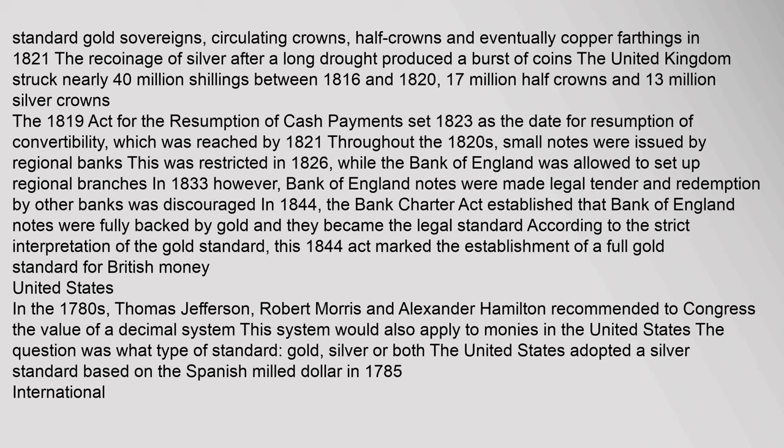The United Kingdom struck nearly 40 million shillings between 1816 and 1820, 17 million half-crowns, and 13 million silver crowns. The 1819 Act for the Resumption of Cash Payments set 1823 as the date for resumption of convertibility, which was reached by 1821. Throughout the 1820s, small notes were issued by regional banks, restricted in 1826, while the Bank of England was allowed to set up regional branches in 1833. In 1844, the Bank Charter Act established that Bank of England notes were fully backed by gold, marking the establishment of a full gold standard for British money.